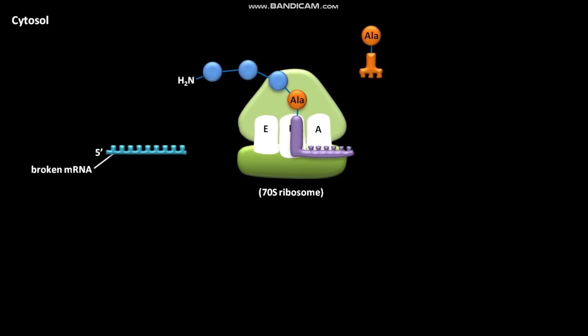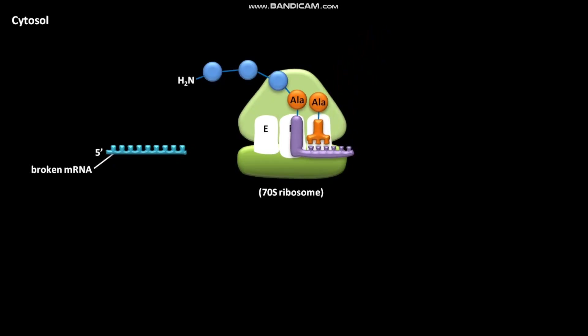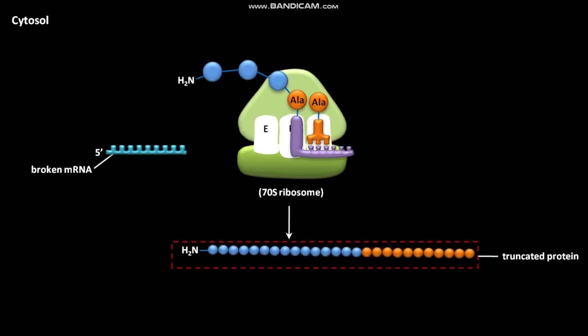During this translation, tRNAs carrying their specific amino acids enter the A site of the ribosome and elongate the nascent polypeptide chain. As a result of this translation, a truncated or shortened protein is formed.